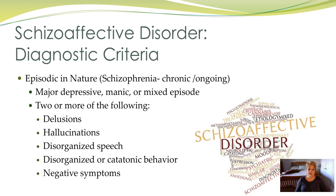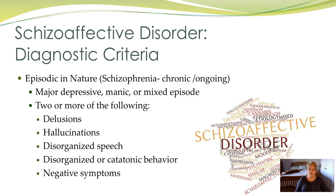Schizoaffective disorder is episodic in nature, whereas schizophrenia is chronic and ongoing. With it being episodic, you will see major depressive moods, mania, or mixed episodes, and then two or more of the following criteria: delusions, hallucinations, disorganized speech, disorganized or catatonic behavior, or negative symptoms.